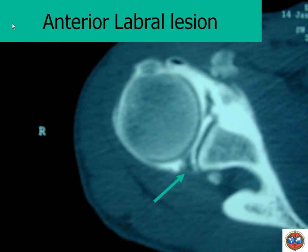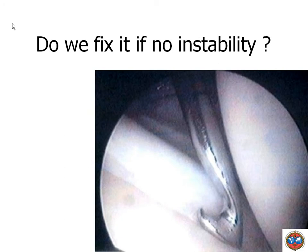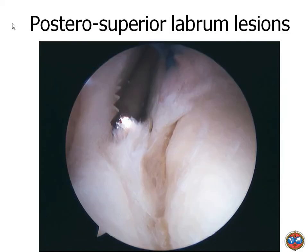This is a true labral lesion that should be fixed. If the shoulder is unstable under anesthesia, we should fix it; if not, we should leave it. This is a posterior superior labrum lesion — for people who do sports arthroscopy and see that type of lesion in a handball or volleyball player, you should be aware that if you fix this lesion this sports person will never be as strong as before.